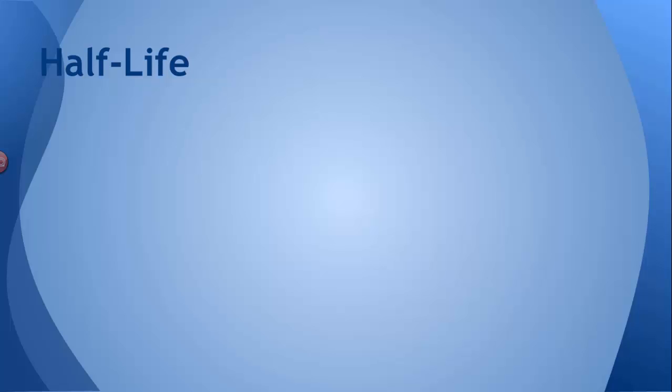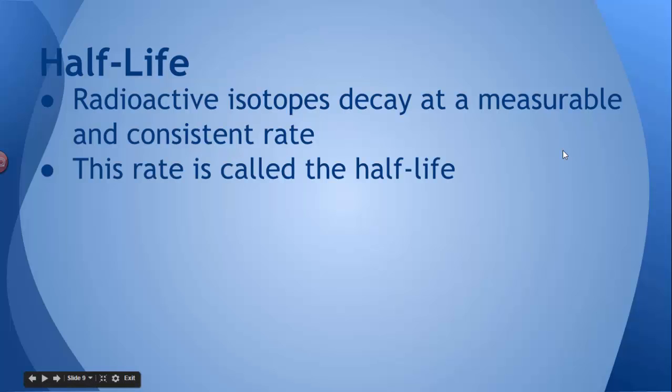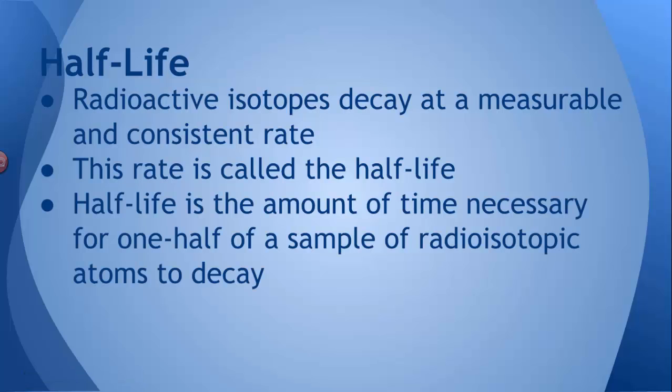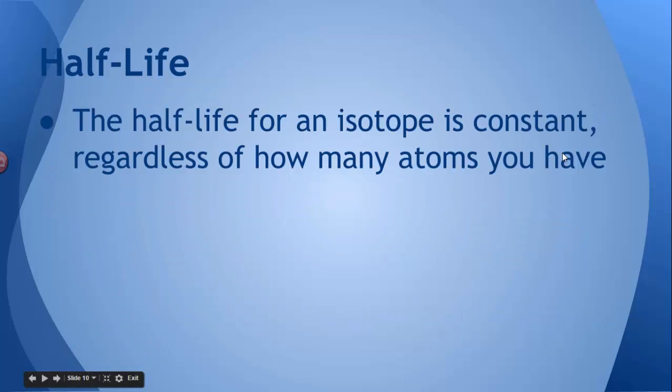In order to do that, we need to know about something called half-life. Half-life is the rate at which radioactive isotopes decay. It's constant and it's measurable. In some cases, it's very short. In some cases, it's very long. But what half-life literally means is the amount of time necessary for half of a sample of radioactive atoms to decay and turn into something stable. Half. That's why it's called half-life. Sometimes they're seconds. Sometimes they're years. Sometimes they're thousands of years. Sometimes they're millions of years. Half-lives depend on the radioactive isotope that you're talking about.